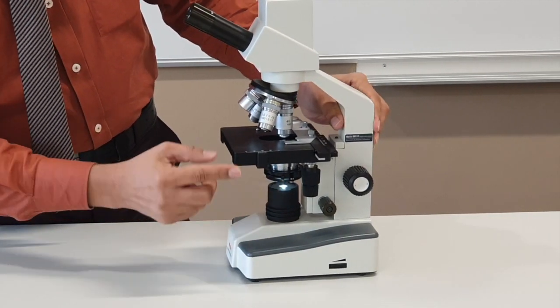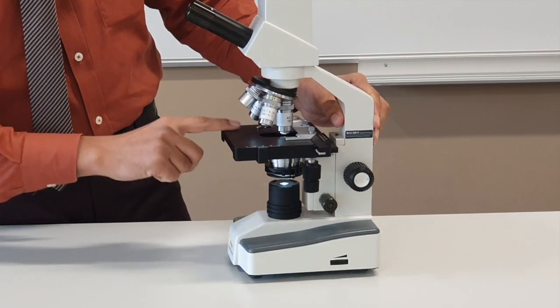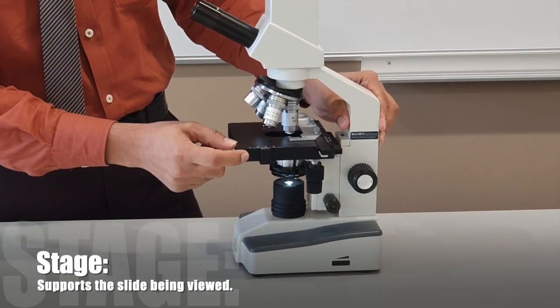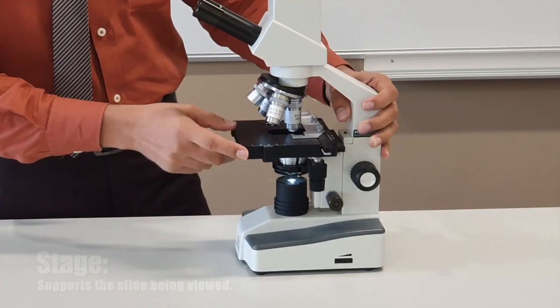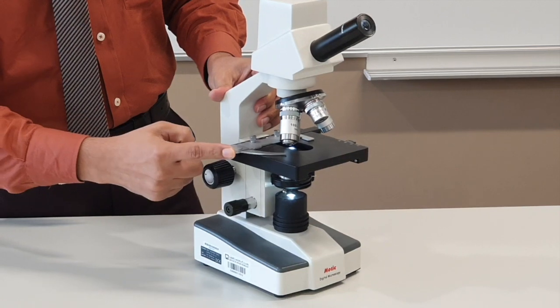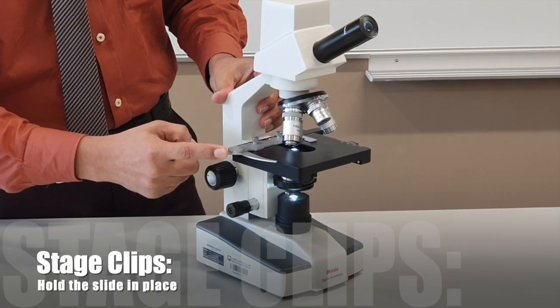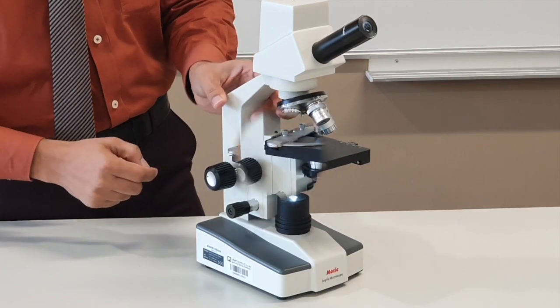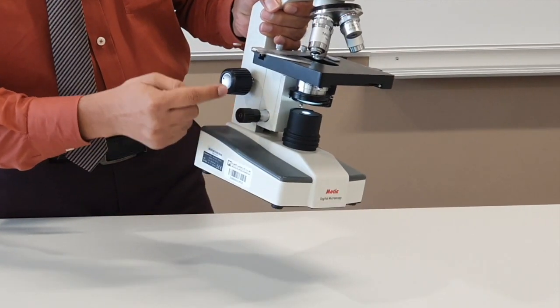Above that, just above the diaphragm, we have this area. This is called the stage, where you place your slide or specimen. The stage has these clips. These are called stage clips that hold the slide in place on the microscope.